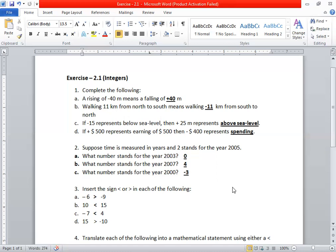Suppose time is measured in years and 2 stands for the year 2005. What number stands for the year 2003? Just count: 2 stands for 2005, 1 stands for 2004, then 0 stands for 2003. So zero is the correct answer.